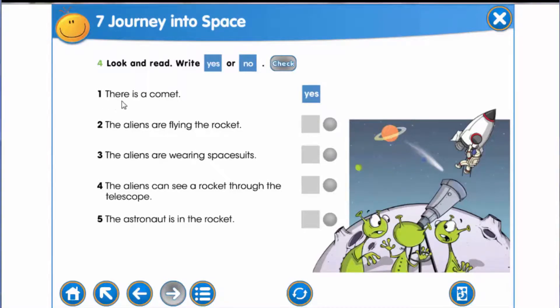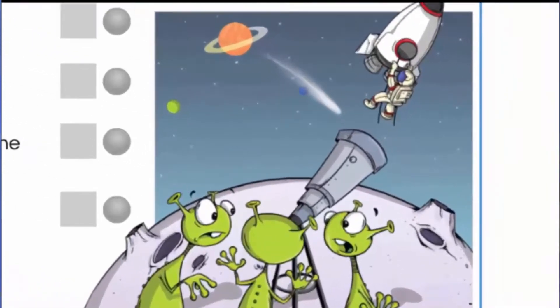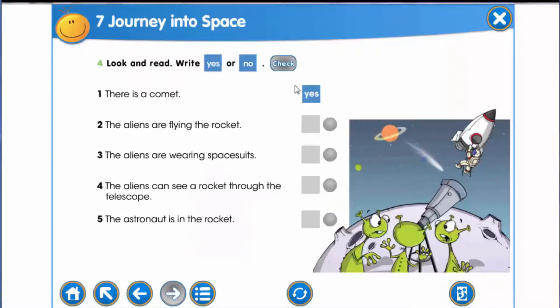The first is, there is a comet. Look at the picture. Can you see the comet? Yes, you can see it. That's why you'll write yes. The second sentence, the aliens are flying the rocket.